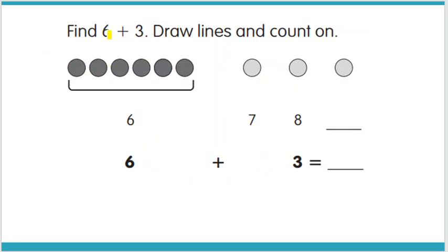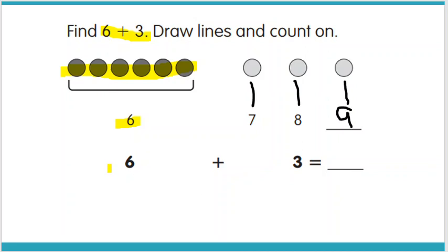Now we have 6 plus 3. In your mind you put that group of 6 — that bigger number. So there's 6, and then we're going to go 7, 8, and then 9. So 6 plus 3 equals 9.